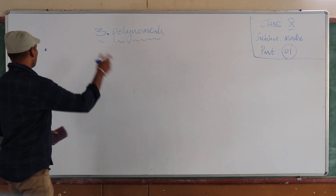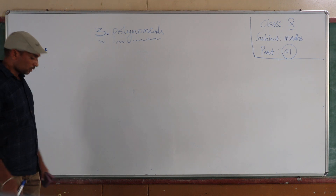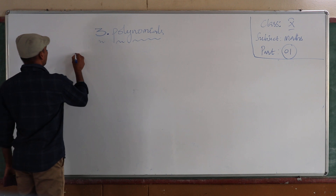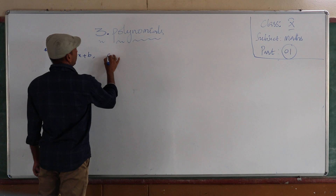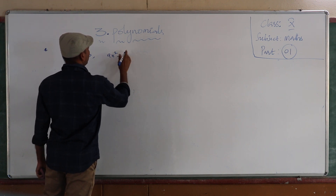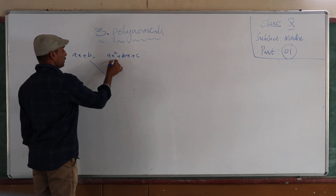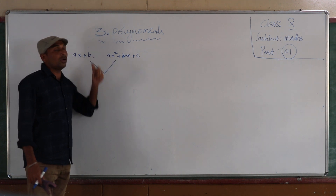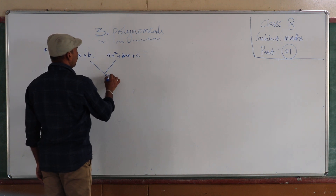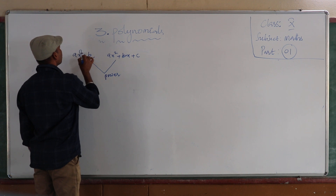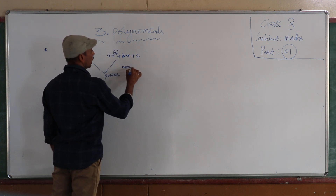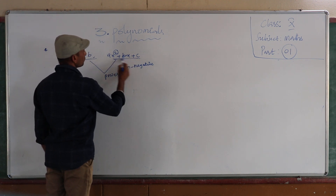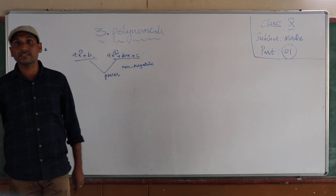So as we know, a brief introduction: what is a polynomial? We know that if you take any expression — which means AX plus B, or AX squared plus BX plus C — if the given expression contains a variable X where the power of the variable is always a positive number, means a non-negative integer, then we can say the given expressions are polynomials.